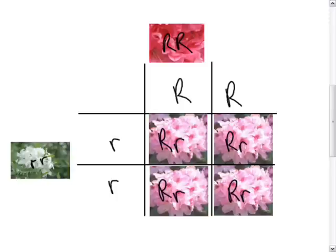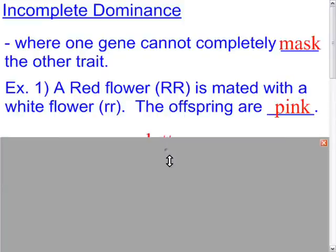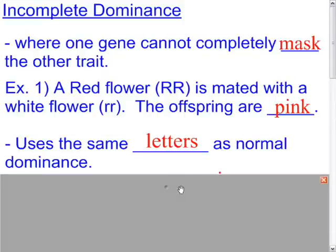The flowers are actually pink — they're a blend of both the red and the white. So in incomplete dominance, if a red flower homozygous dominant is mated with a white flower homozygous recessive, the offspring is pink.